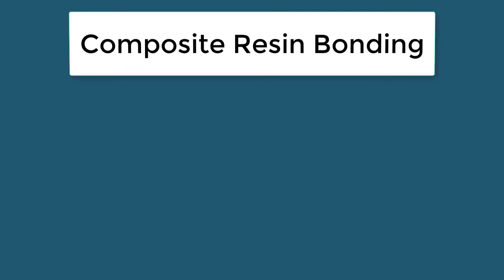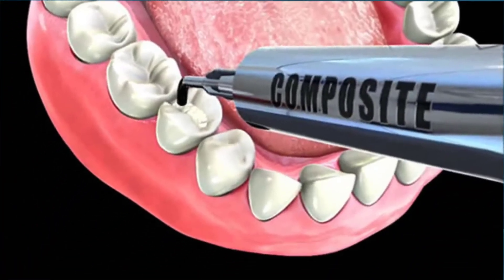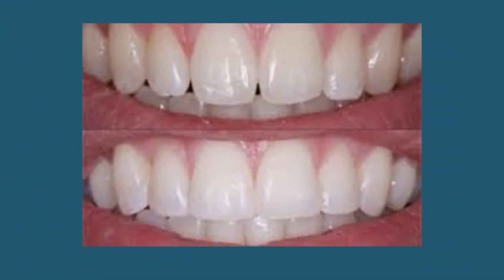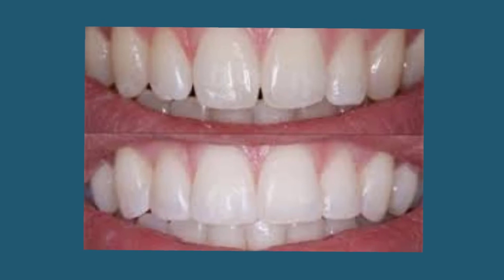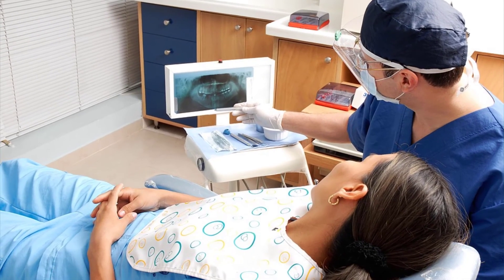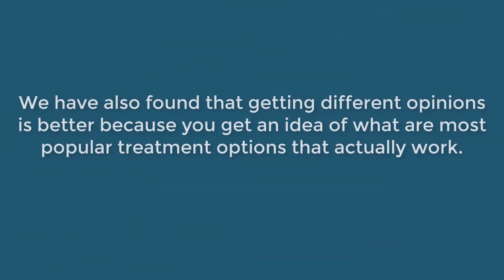Composite resin bonding is a cosmetic technique wherein composite resin is shaped and molded on your teeth to give the appearance of a straighter, wider smile. It can be used as a cosmetic solution to chipped teeth, gapped teeth, and staining in both the teeth and fillings. The price for this procedure generally starts at around $300, but if most of your teeth are affected by enamel hypoplasia, it could become quite costly. The best thing to do is go to your local dentist and get their opinion on the best course of action. Getting different opinions is also better because you get an idea of what are the most popular treatment options that actually work.